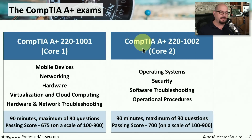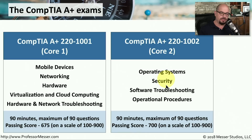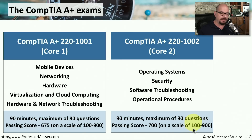The other exam you'll need to pass is the CompTIA A+ 220-1002, or the Core 2 exam. It covers operating systems, security, software troubleshooting, and operational procedures. Again, it's 90 minutes long with a maximum of 90 questions, scored between 100 and 900. To pass your 220-1002, you'll need a score of 700.